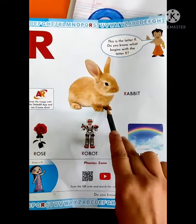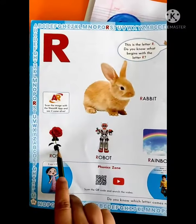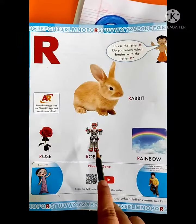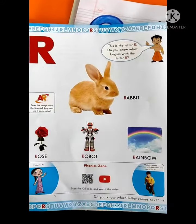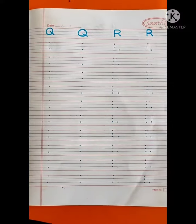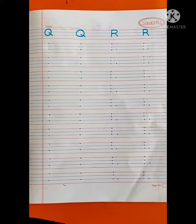R for Rabbit. R for Rose. R for Robot. R for Rainbow. So now we will write Q and R on dots.